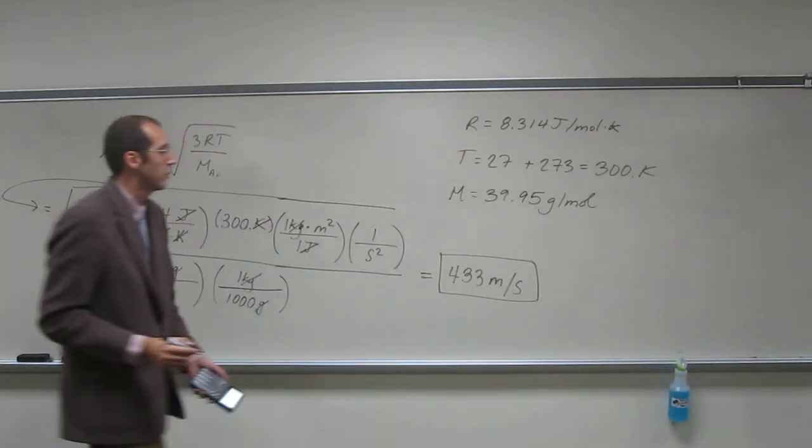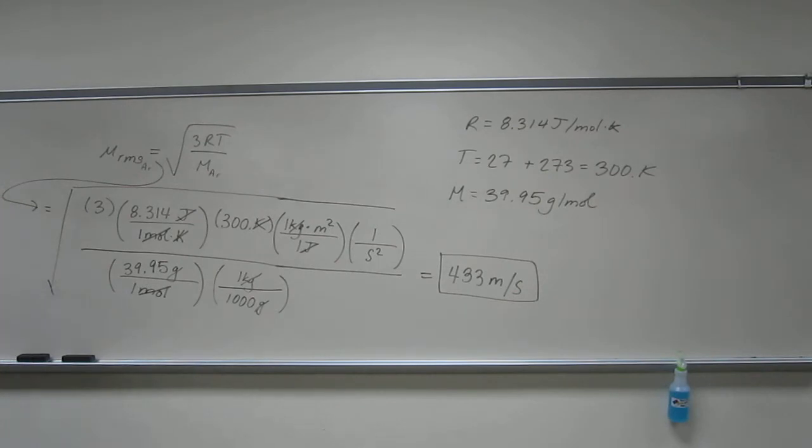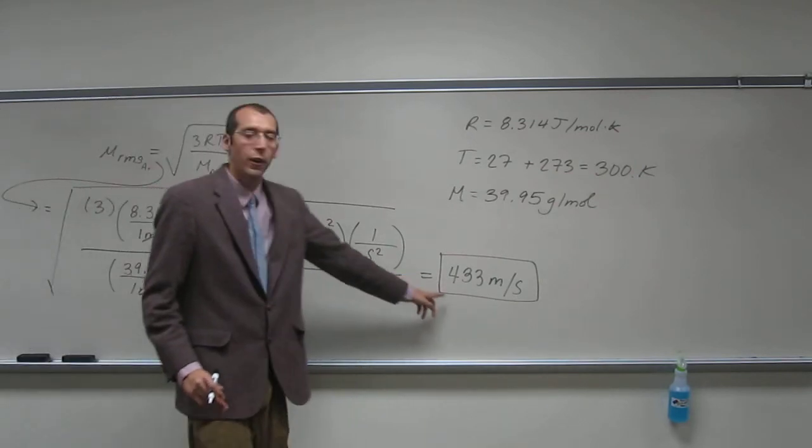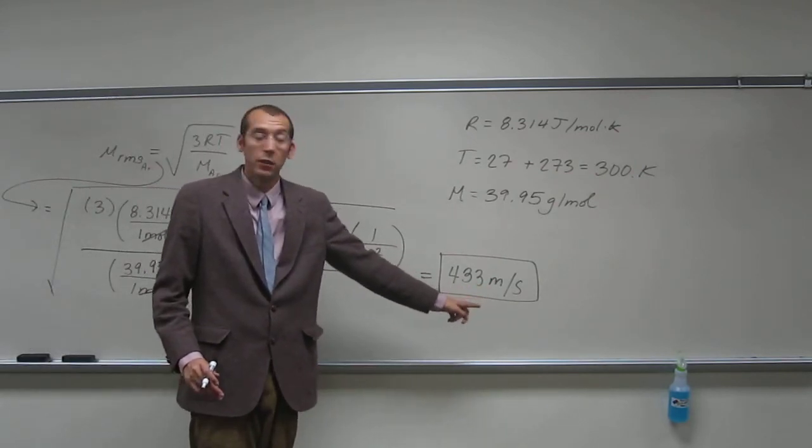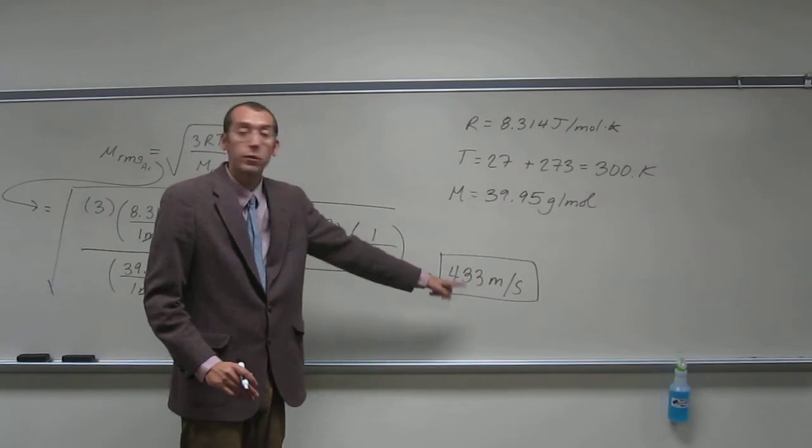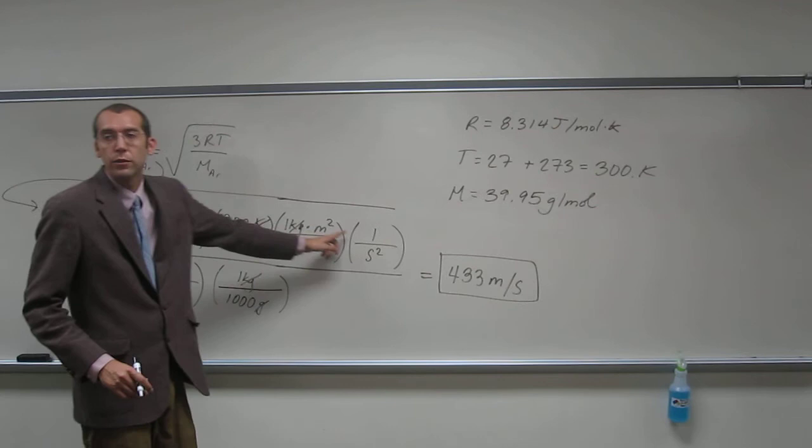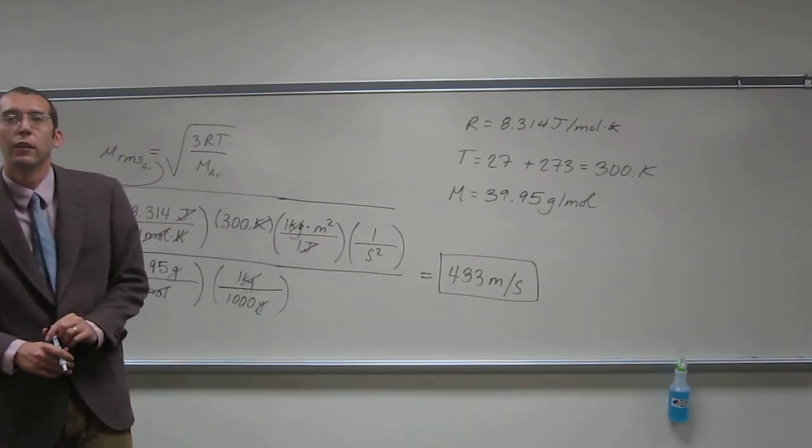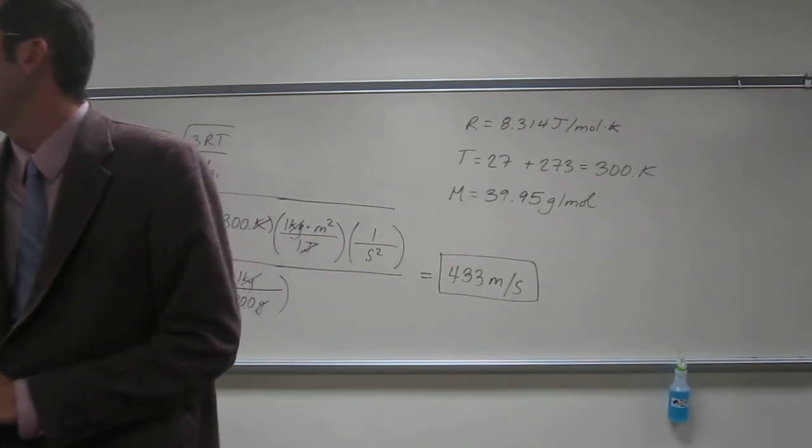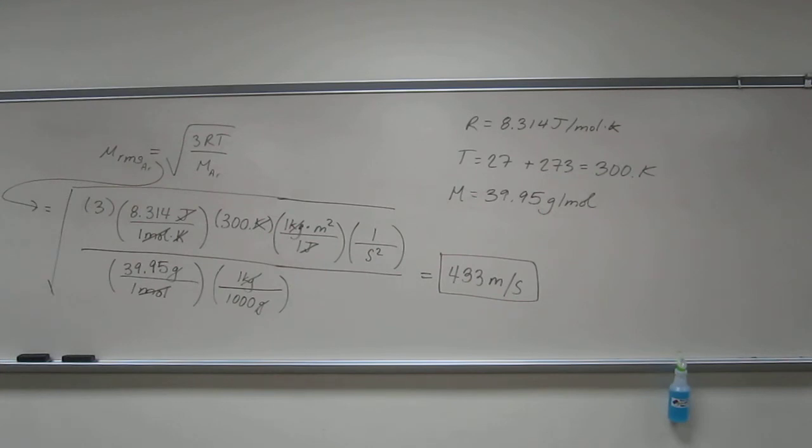Okay. So, the root mean squared of argon atom at 27 degrees Celsius is 433 meters per second. Meters per second. Right? Because we're taking the square root of meter squared per second squared. Are there any questions on that one? We can do another one of these if you guys like.